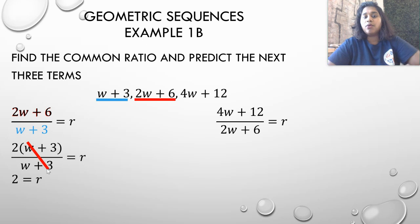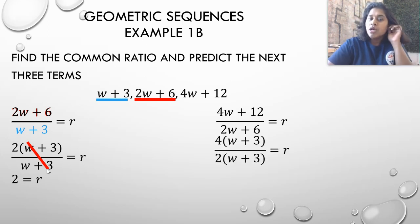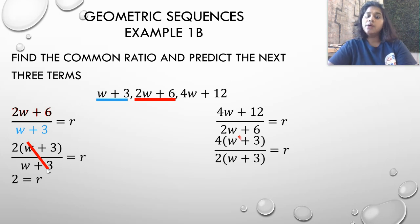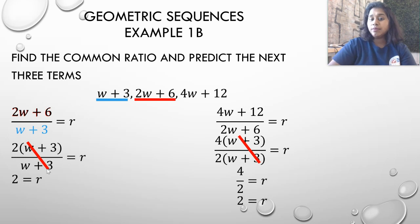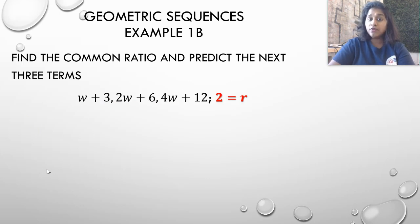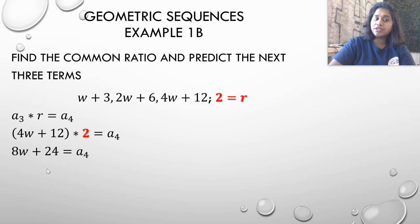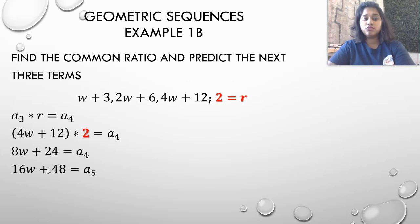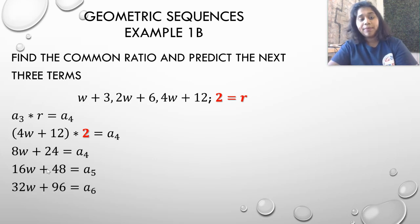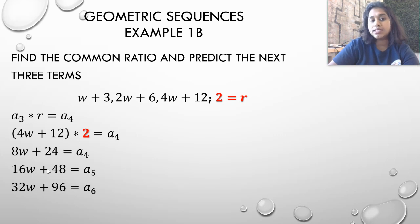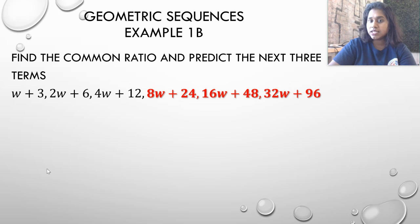Confirming with the third divided by the second term: factor out 4 from the top and 2 from the bottom, the (w+3) terms cancel again, and 4÷2 is still 2. Common ratio confirmed as 2. Multiply the third term 4w+12 by 2 to get the fourth term 8w+24, then 16w+48 for the fifth, and 32w+96 for the sixth. We successfully predicted a sub 4, a sub 5, and a sub 6.